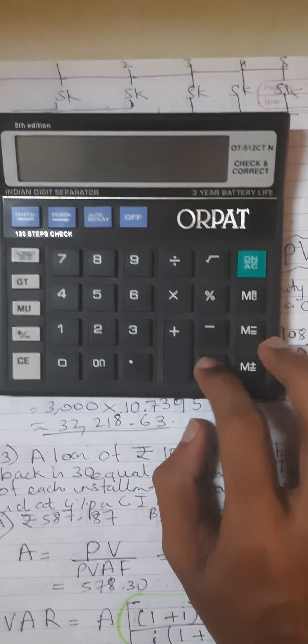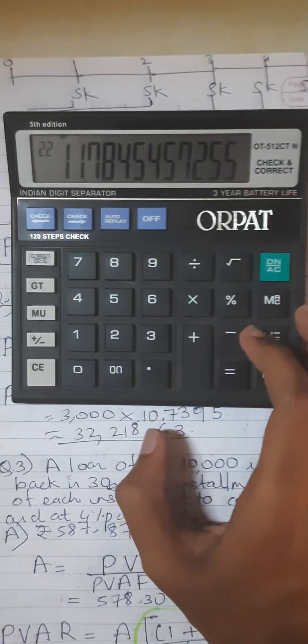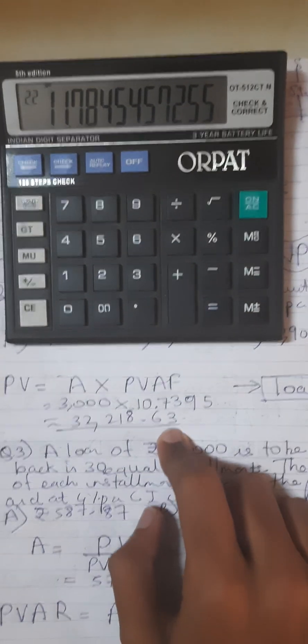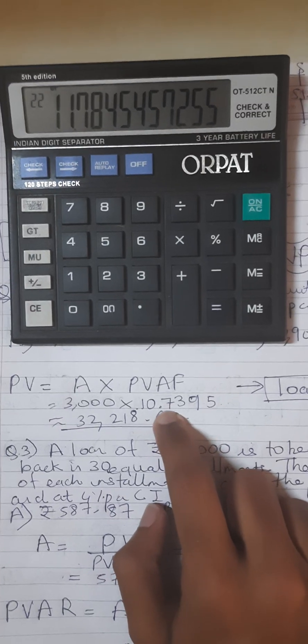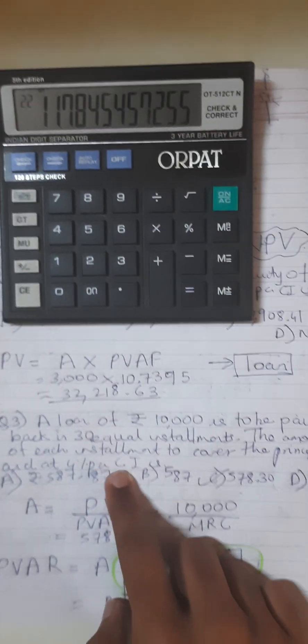This gives 11.78 as the present value annuity factor. But we have seen that the correct annuity factor is 10.73. Then they multiply with this and get the wrong answer. So be careful and don't make this mistake.